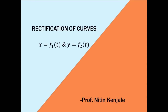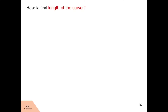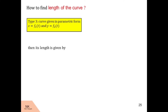Let us recall how to find the length of a curve given in its parametric form. Assume the parametric form of the curve is x = f1(t) and y = f2(t). Then its length is given by the integral of the square root of (dx/dt)² + (dy/dt)² dt over the limit t1 to t2.